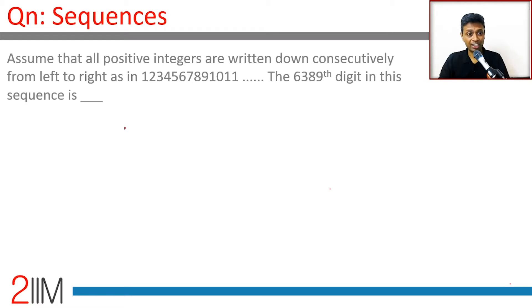Assume that all positive integers are written down consecutively from left to right like this: 1, 2, 3, 4, 5, 6, 7, 8, 9, 10, 11, 12, 13, 14. The 6389th digit in this sequence.